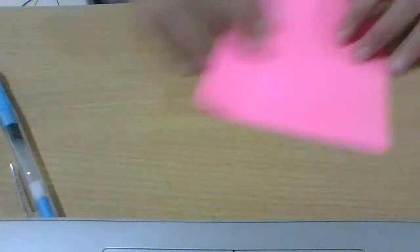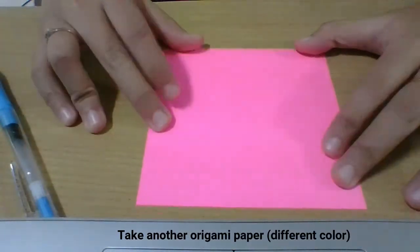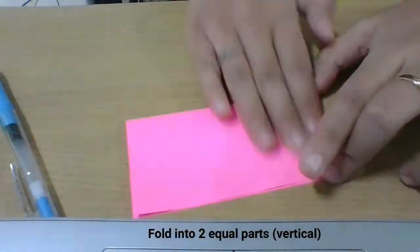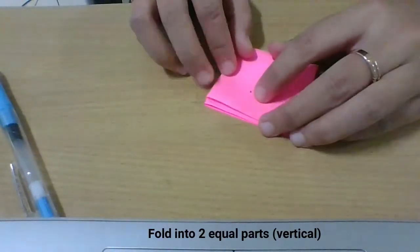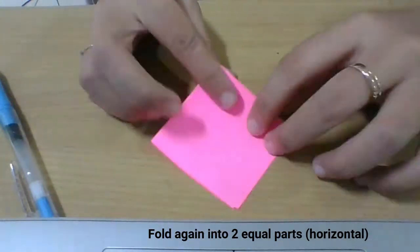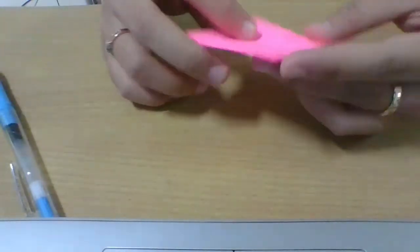Okay, take another paper with different color and then fold into two equal parts. Fold again, and then fold again in diagonal.